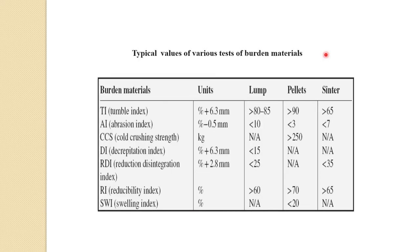Typical values of the tests — for tumbler index for strength: different ranges for lump ore, pellets, and sinters; similarly for abrasion index, cold crushing strength, decrepitation, reduction disintegration, reducibility index, and swelling index. These are the typical values needed for blast furnace burden material, and one should make sure that after testing they fall within this range.